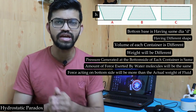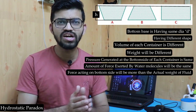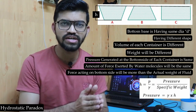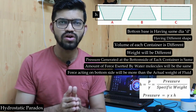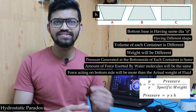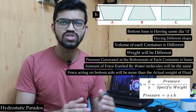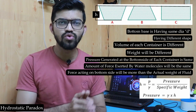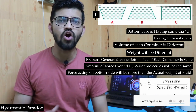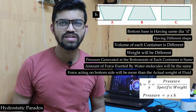Pressure is nothing but force divided by area, where the area is the base diameter — which is the same for all containers — and the force purely depends upon the pressure head. We can calculate the pressure at the base using the formula: pressure = gamma times h, where gamma is the specific weight of the fluid and h is the height. So the force exerted by the fluid molecules on the base is more than the actual weight of the fluid, irrespective of the total weight. This is the hydrostatic paradox.